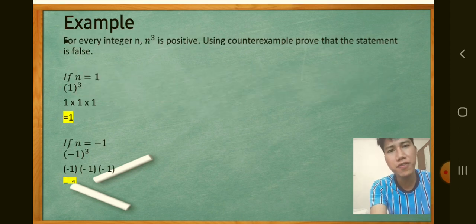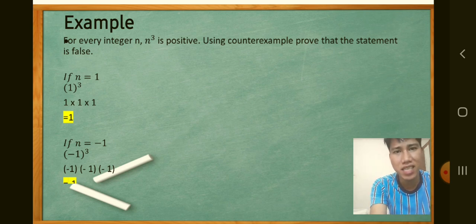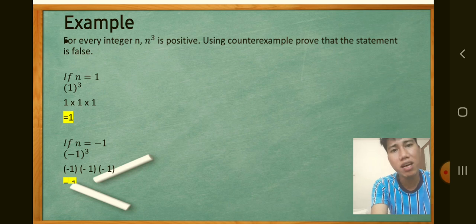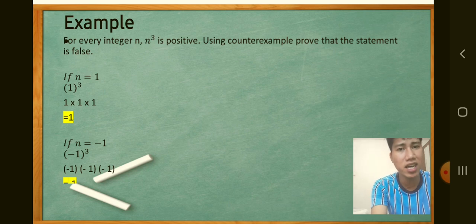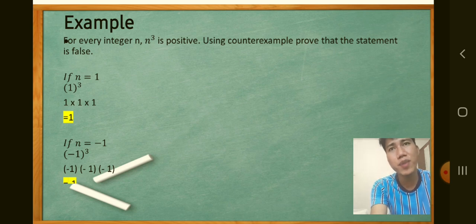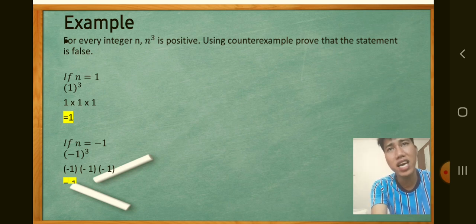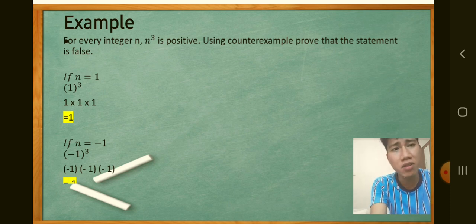Example: for every integer n, n cubed is positive. Using a counterexample, prove the statement is false. If n = 1, then 1³ = 1, which is positive — so the statement holds here. However, if n = −1, then (−1) × (−1) × (−1) = −1, which is negative. Thus, for negative integers, the statement is false. This is a counterexample showing the original statement is not always true.